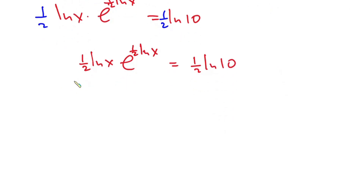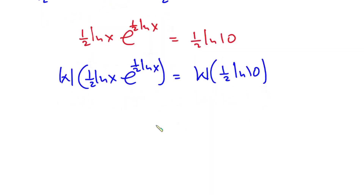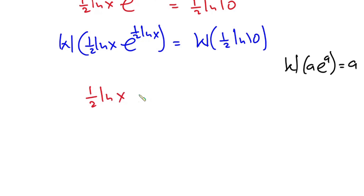Now let's introduce Lambert's W function on both sides of the equation. We have W of one half natural log of x times e to the power one half natural log of x, equal to W of one half natural log of 10. Lambert's W function says that W(a·e^a) = a. So the left-hand side simplifies: one half natural log of x equals W of one half natural log of 10.